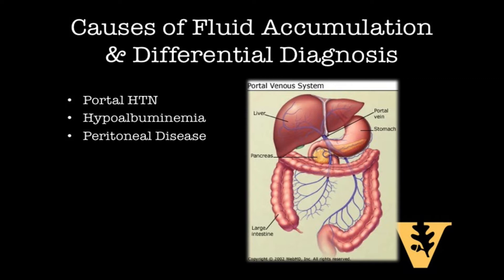Finally, ascites can accumulate from an abnormal flow of fluid such as chyle, pancreatic fluid, blood, urine, and peritoneal dialysis, in which the flow of fluid into the peritoneal space overcomes the ability of the subdiaphragmatic stoma to remove it.